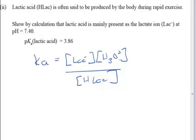Okay, now in this question we're being asked to show by calculation that lactic acid is mainly present in the form of the conjugate base, that's the lactate ion, at pH 7.4.